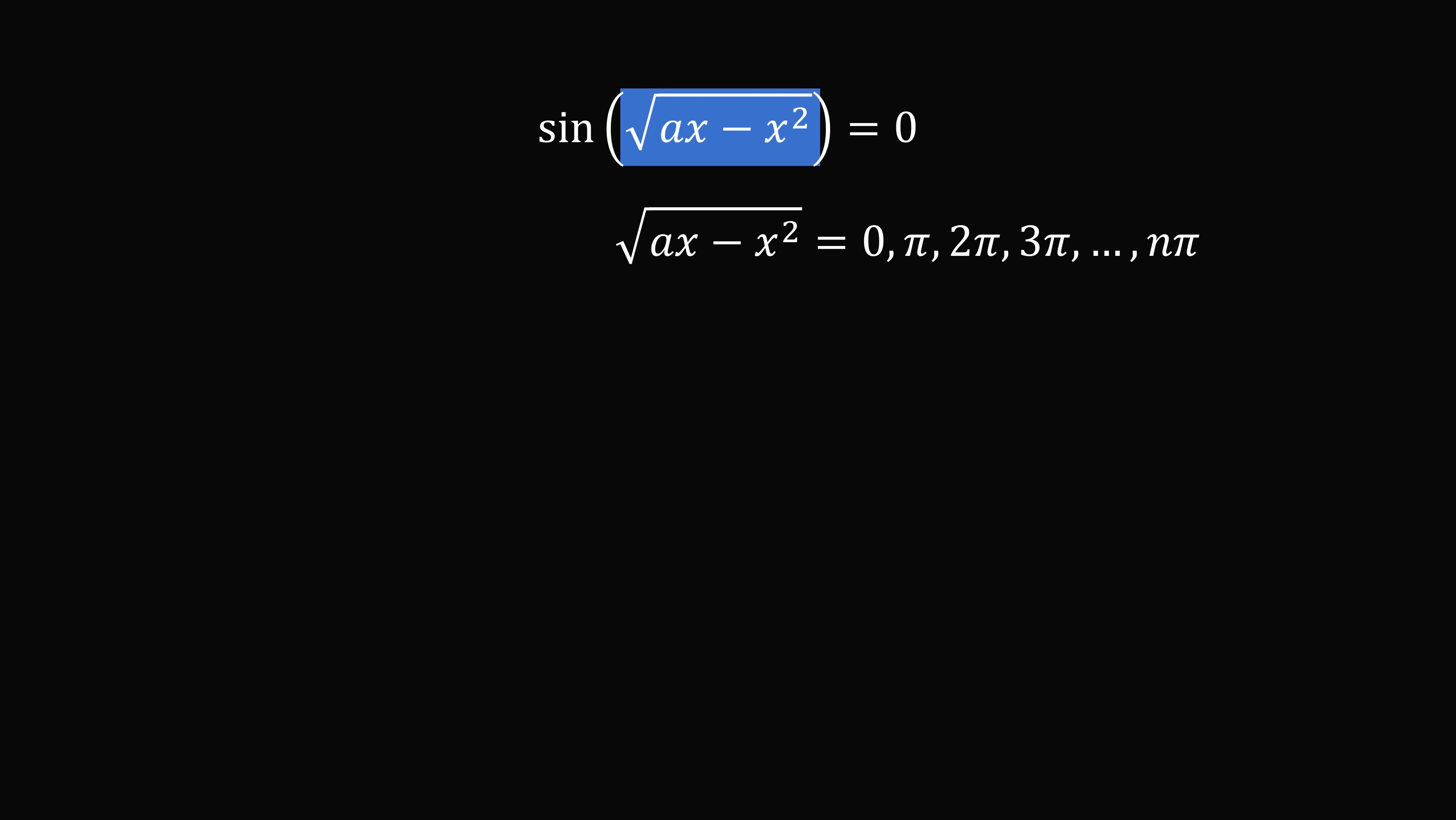Once x gets too large, the thing inside the square root will be negative, so we can't have any more solutions. So let's take our equation and set it equal to the maximum value n times pi. We can square both sides of the equation, and then we can make this into the canonical form of a quadratic equation. x squared minus ax plus n squared times pi squared is equal to 0.